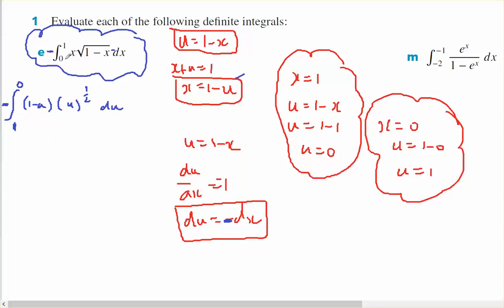Remember, I replace when x is 0, u is 1. That goes down the bottom, irrespective of whether you want the small on the bottom and the bigger on the top.